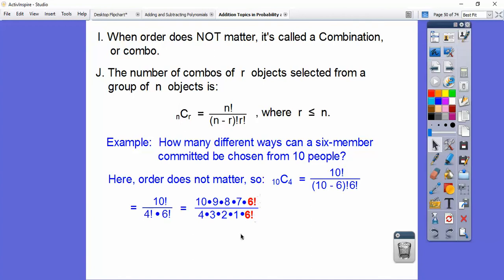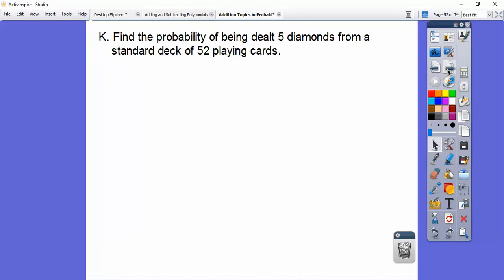Those guys cancel. Again, 4 will go into that guy that many times. This will go into this guy and this will go into this guy. So they'll always cancel. I get 5 times 3 times 2 times 7. It's 210 different ways you can make a committee of 6 people out of 10.